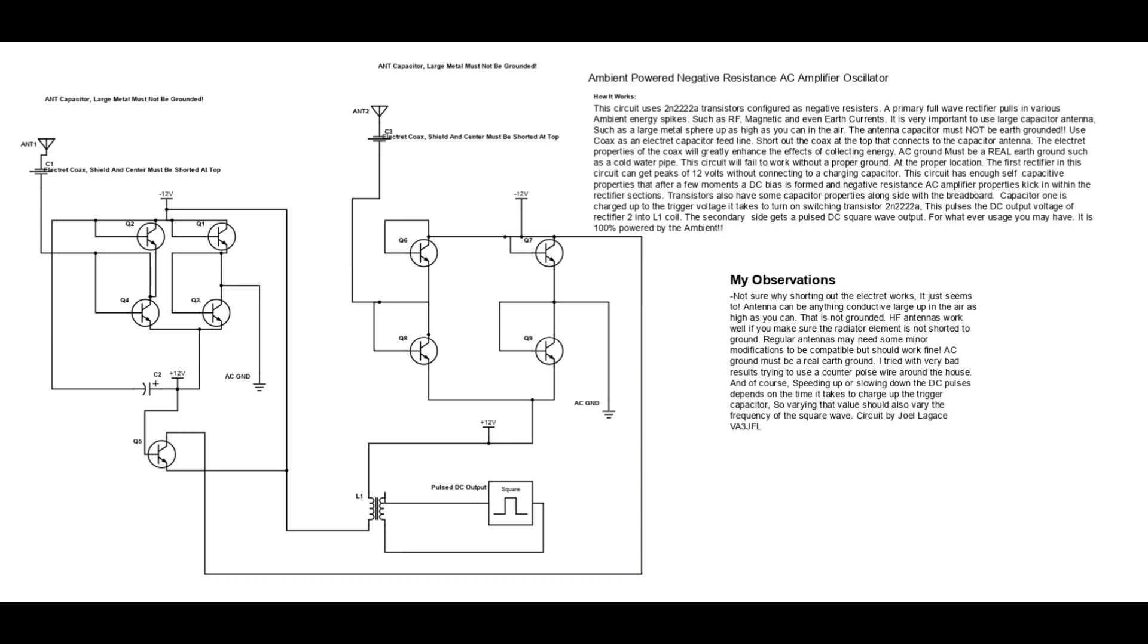AC ground must be a real earth ground, such as a cold water pipe. This circuit will fail to work without a proper ground at the proper location.